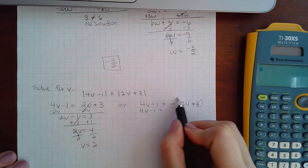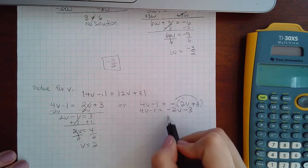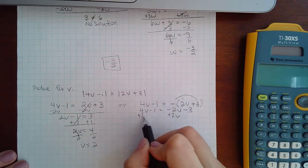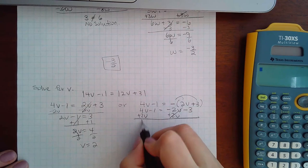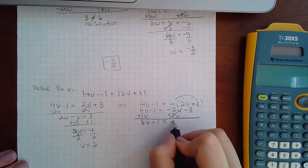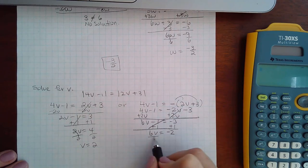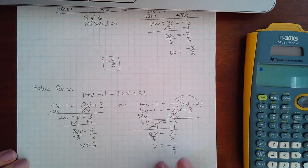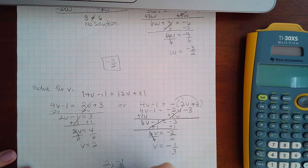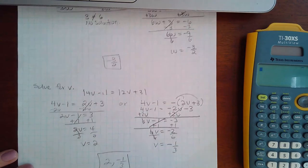Over on this side I get negative 2v minus 3. If I solve, I get negative 1, and then divide by 6, and I get negative 1 third. So in this case I did end up with two solutions.